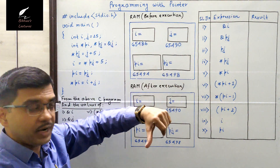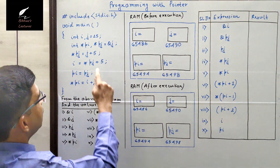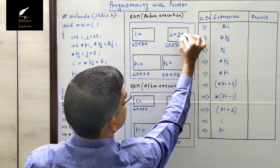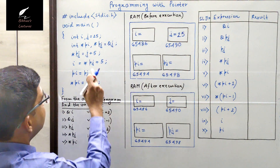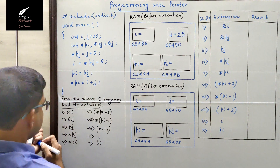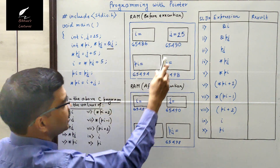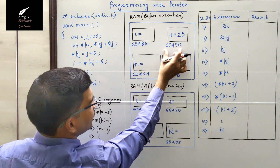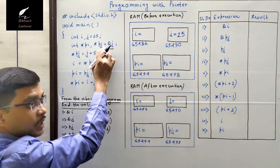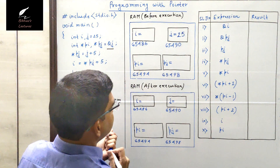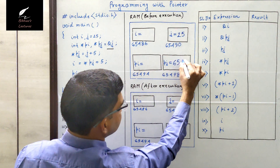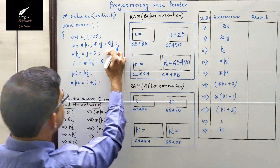This is the pictorial representation of RAM before execution of the program. Initially the value assigned to variable j is 25. i has not been initialized yet. In pj we are storing the address of j — that is ampersand j. j is 25 and its address is 65490, so 65490 is being assigned to pointer pj.